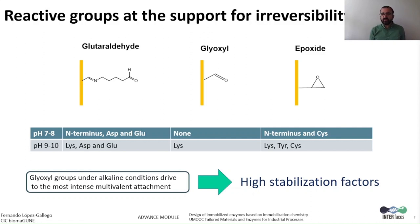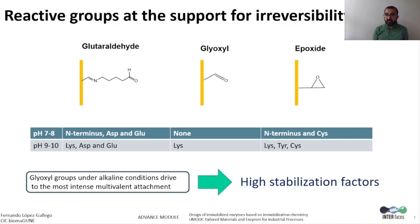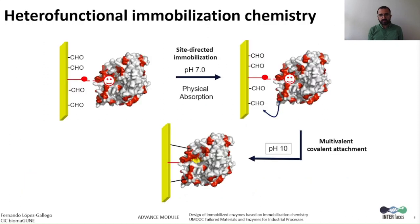The N-terminus amine of proteins is a low-pKa amine, with a pKa around 7, which can drive immobilization under more physiological pH. Besides lysines, cysteines are also broadly used to directly interact with epoxides under more neutral conditions. In general, glyoxyl chemistry tends to thermally stabilize proteins to a higher extent than other reactive groups, due to its capacity to promote intense multivalent attachments between the enzymes and surfaces functionalized with glyoxyl groups.